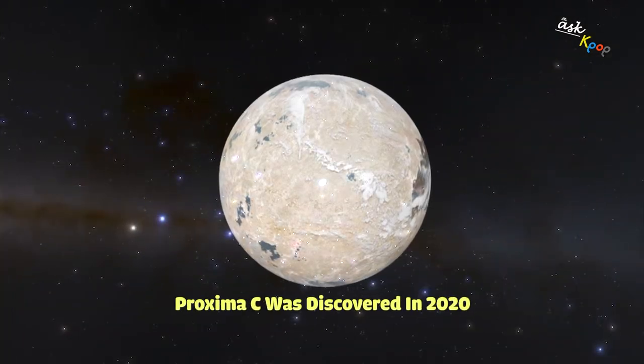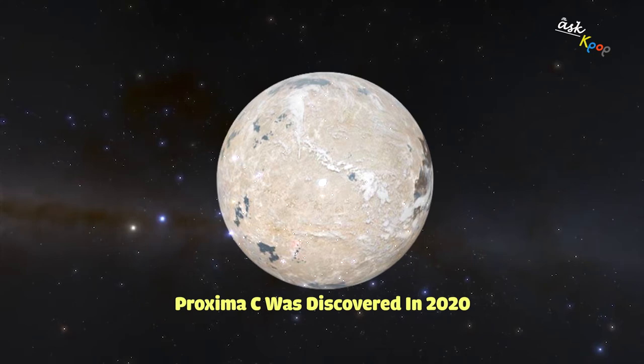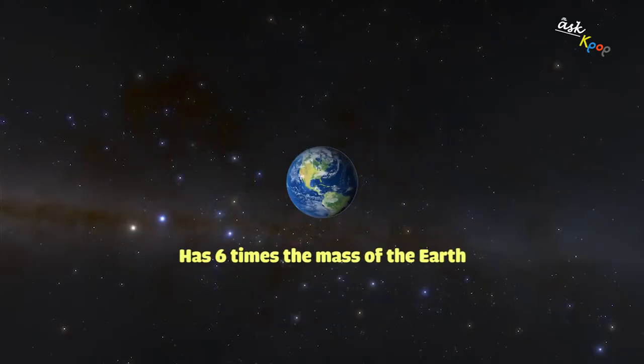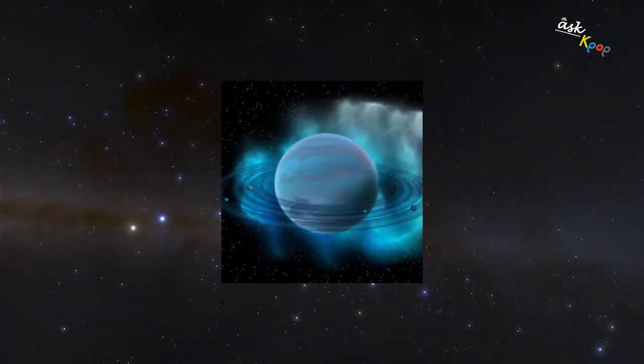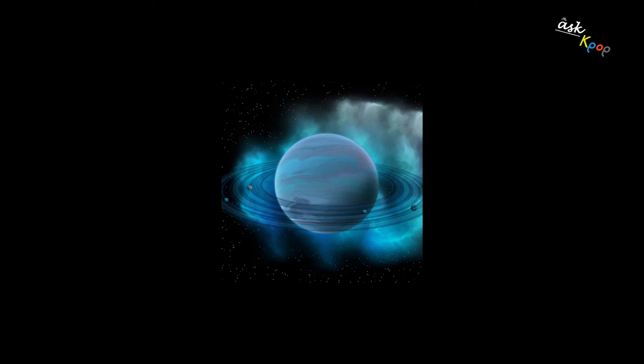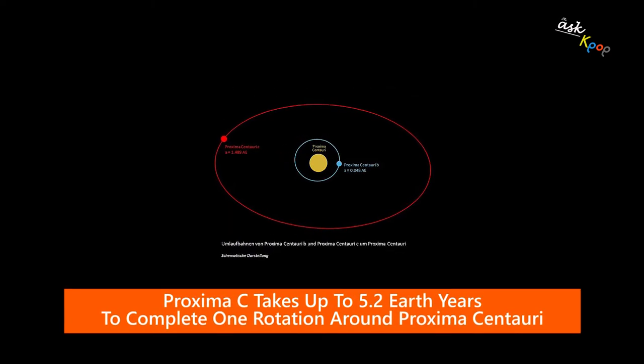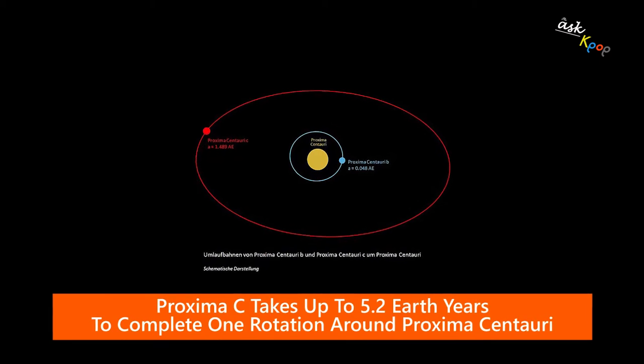Proxima c, discovered in 2020, is heftier than the other two planets, coming in at six times the mass of Earth. This would make it a super-Earth, planets that are significantly larger and more massive than Earth, but smaller and less massive than Neptune. Scientists estimate that it orbits its star every 5.2 years.